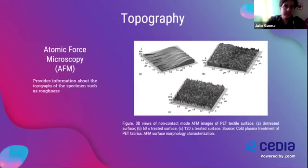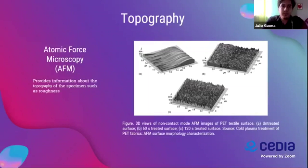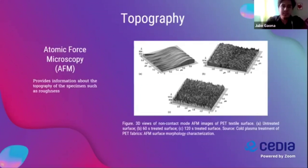Topography serves the purpose of studying the forms and features of a surface. It is measured using atomic force microscopes, and the unit is the root mean square (RMS) value, which represents the average height from the central plane of the samples. In the figure, you can see peaks and variations that represent the topography change.